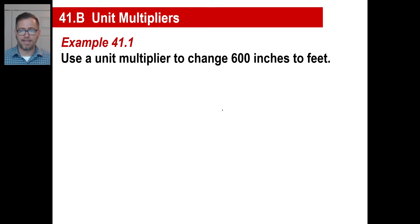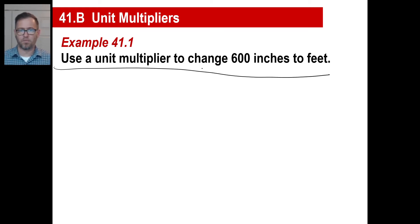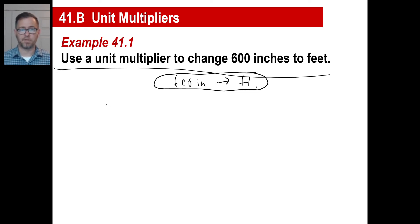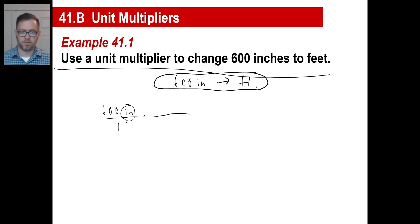Let's use a unit multiplier to change 600 inches to feet. You might want to write this down. First thing: write this as a simplified version — 600 inches to feet. Second thing: write what you are given, which is 600 inches. Third: multiply by a fraction with this same unit on the bottom. As long as you have an inch on top, multiply by another fraction with an inch on the bottom. Can we go inches to feet? Yes, because 12 inches is one foot.